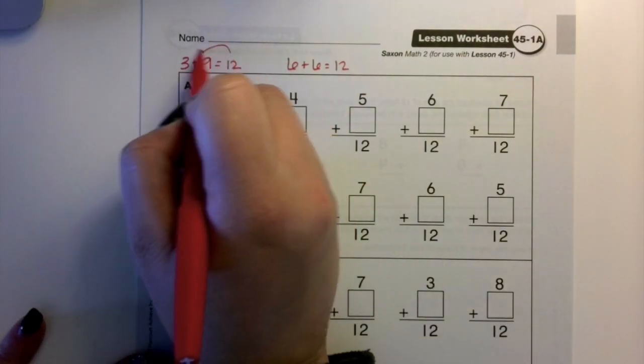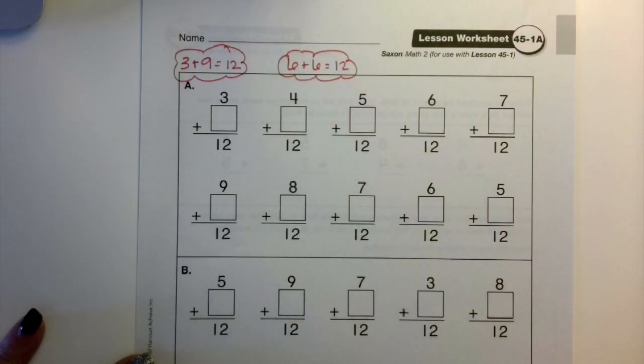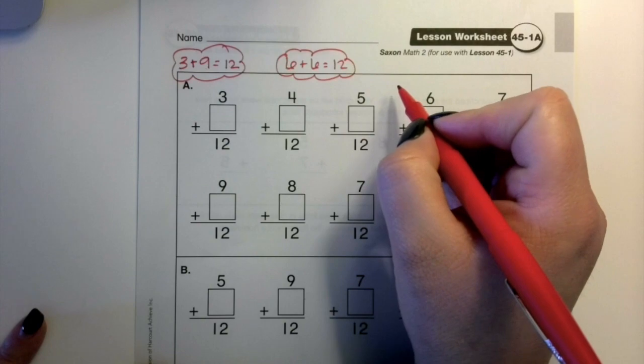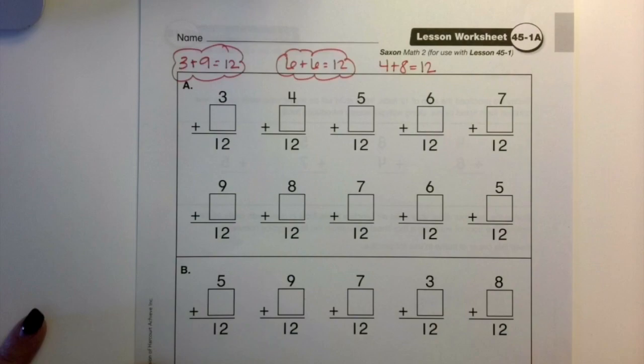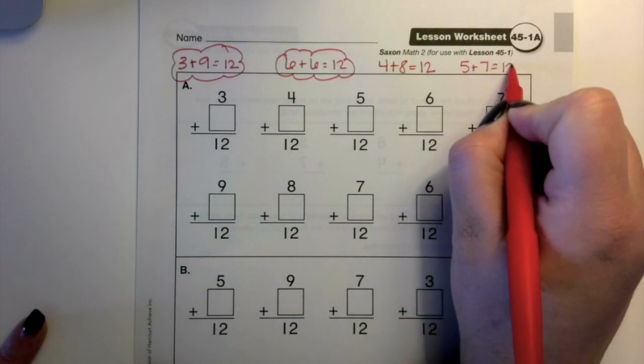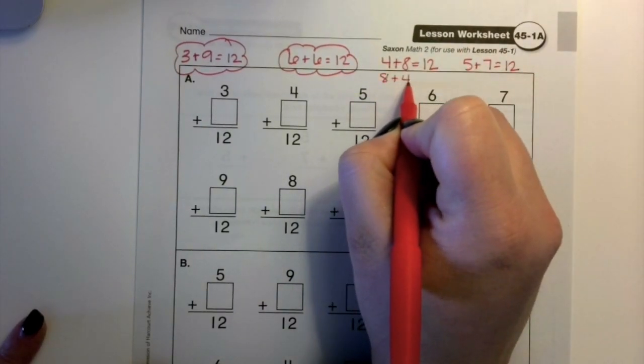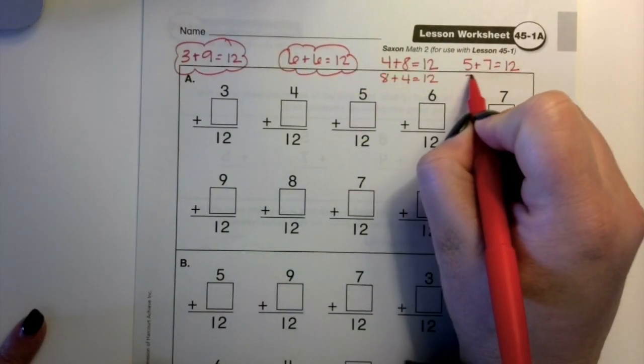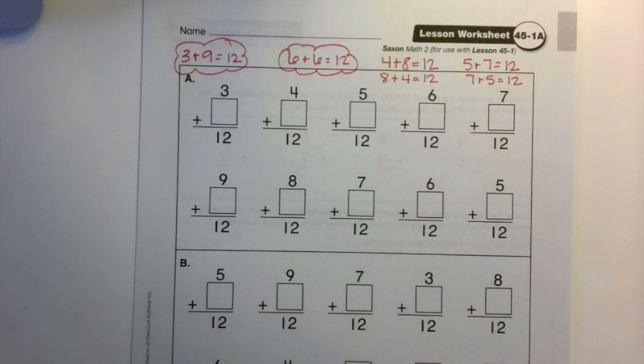Those are review facts for you. Okay? At least they should be. There's two more, though, two more pairs of numbers that when you put them together, they're going to equal 12. 4 plus 8 equals 12, and 5 plus 7 equals 12. You'll remember that's the same thing as 8 plus 4 is 12, and 7 plus 5 is 12, because we can reverse and switch around those addends.